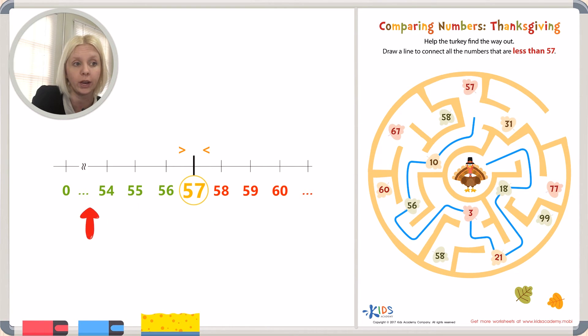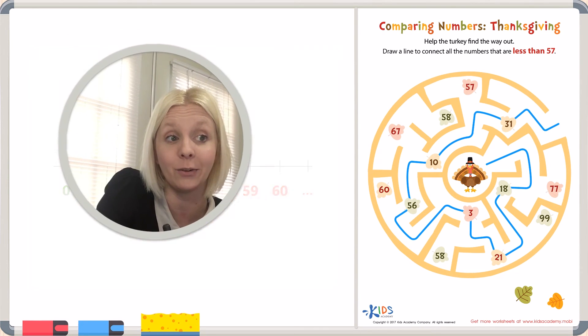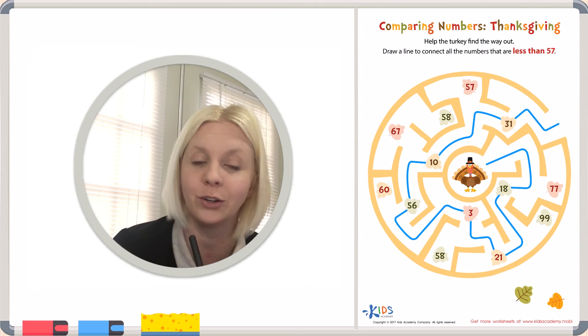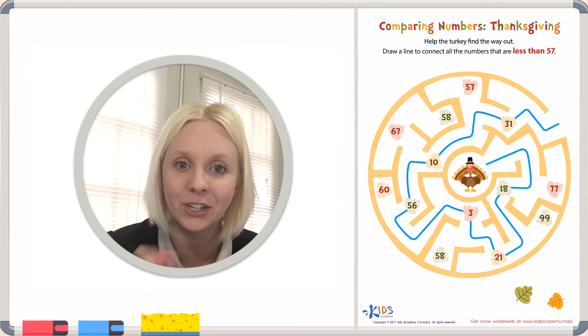We need to go less than this way. Our other choice here is 31. 31 would be on this side of the number line, so we're going to go to 31. Look at that, we made our way out! We got our turkey out of our maze, didn't we? Great job today!